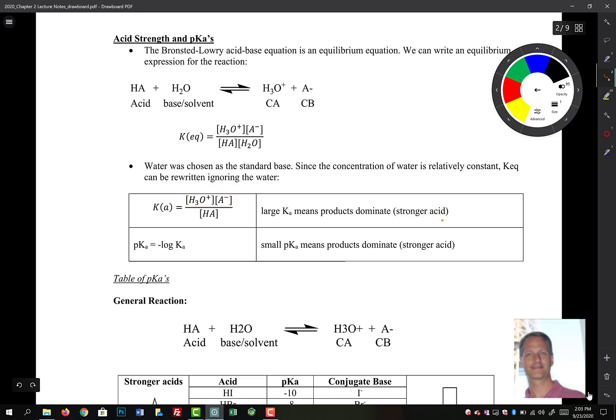You get a large Ka because the numerator is large. If the numerator is large, then we have a stronger acid. Because if we're a strong acid, we live over on this side 100% of the time. What we do is we take the negative log of our Ka, and that makes big Kas small numbers. Negative log takes big numbers and makes them small. So small pKa means that the products dominate. It means that we have a stronger acid.